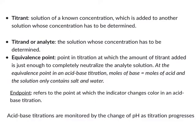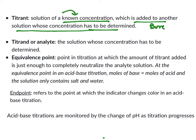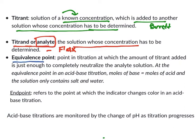Let us dig into a little more detail. The titrant is a solution of known concentration which is added to another solution whose concentration has to be determined — it is added through a burette. The analyte is the solution whose concentration has to be determined and it is already in the volumetric flask. The equivalence point is the point in titration at which the amount of titrant added is enough to completely neutralize the analyte solution.